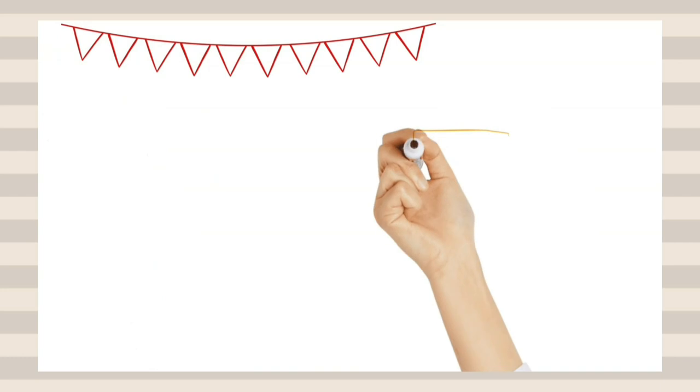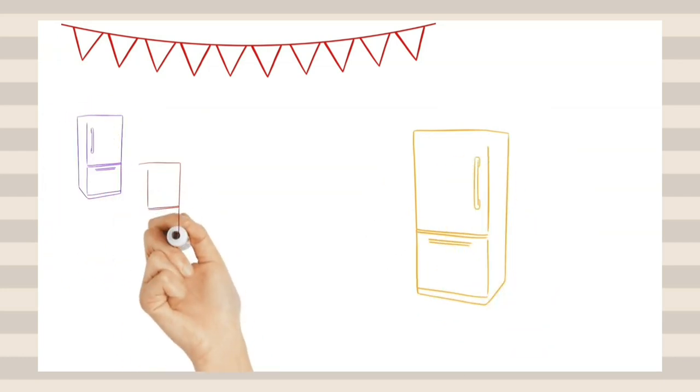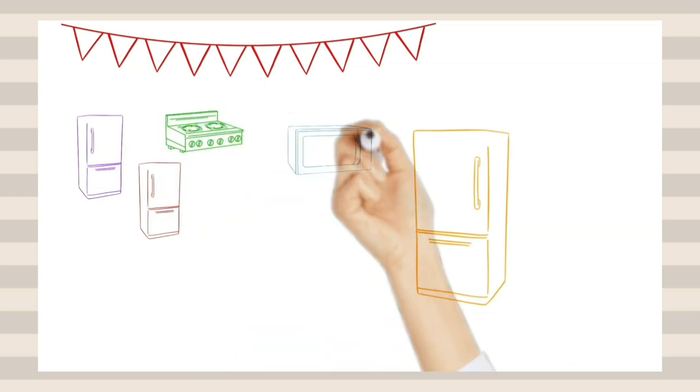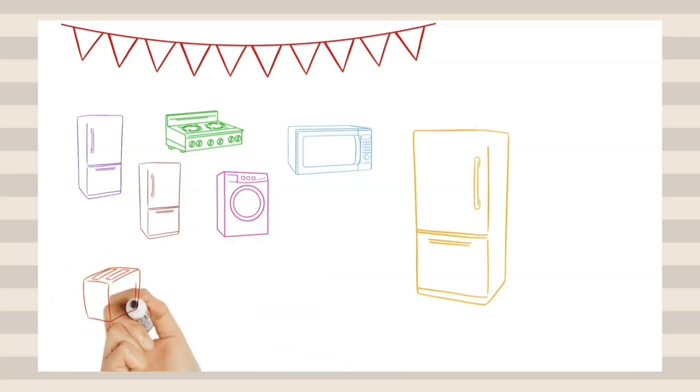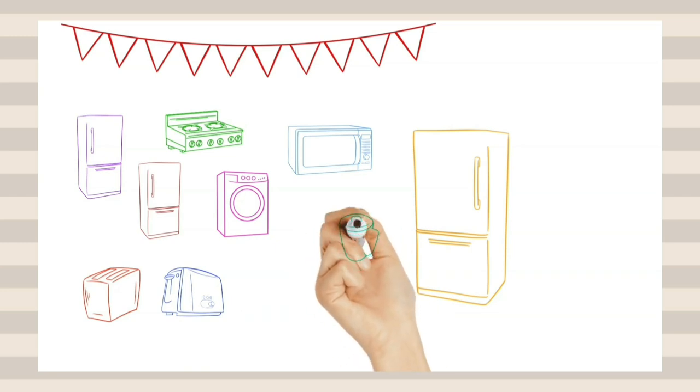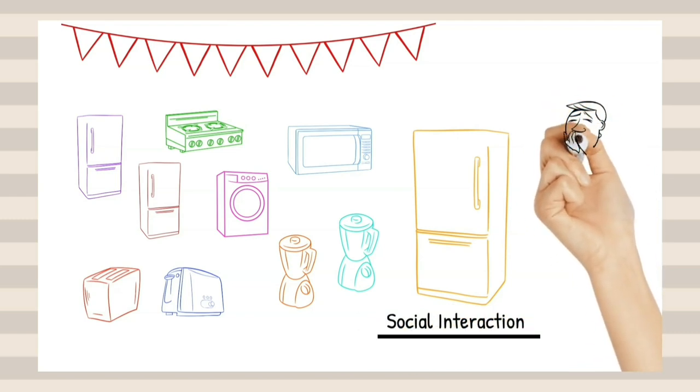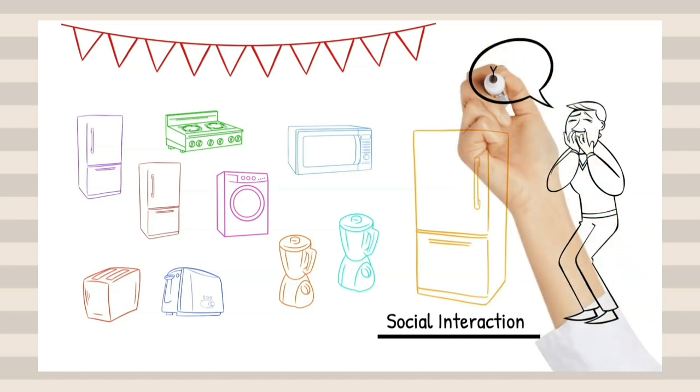He invited all the appliances in the neighborhood kitchens. There were other refrigerators, stoves, microwaves, and washing machines. A couple of toasters even recognized each other from the store, and the blenders hit it off and mixed well with the others. Max was sure the social interaction would cure the inside of his refrigerator. But boy, was he wrong. He opened the refrigerator door and it was even worse.